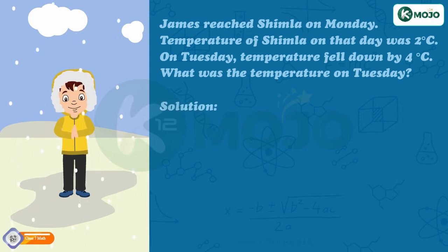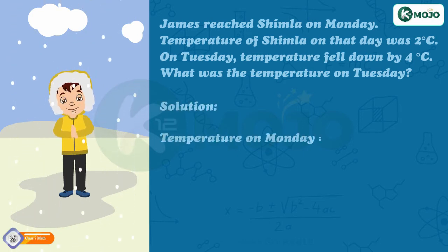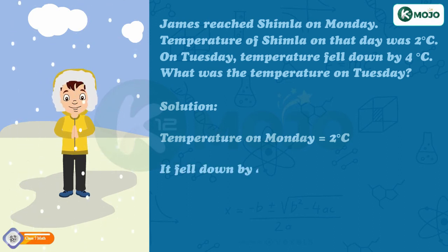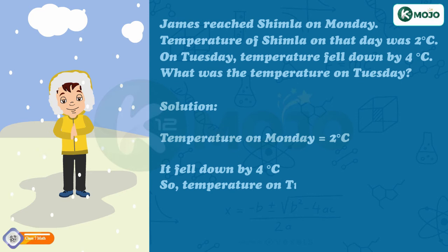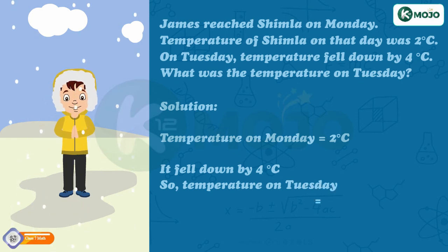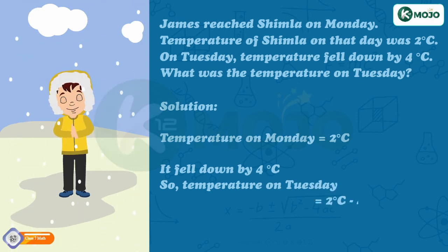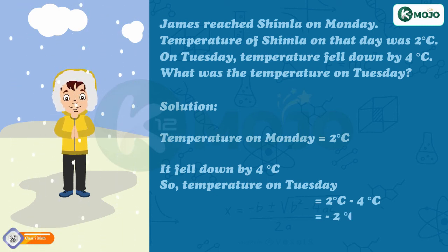Let's solve. Temperature on Monday is equal to 2 degrees Celsius. It fell down by 4 degrees Celsius. So, temperature on Tuesday is equal to 2 degrees Celsius minus 4 degrees Celsius, which is equal to minus 2 degrees Celsius.